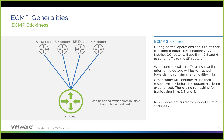In traditional ECMP topologies, when an outage occurs, the router reprocesses the ECMP hashing algorithm and selects a new uplink for all flows. With ECMP stickiness, only the flows using the failed link are rehashed and a new uplink is selected. For example, traffic to 1.1.1.1 using link 1 would, after an outage, be rehashed to use path 4, while all other flows stick to their previously used uplinks. NSX-T does not currently support ECMP stickiness.